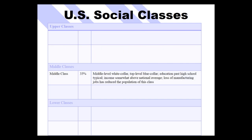Now let's move down to the middle classes, starting with the upper-middle level — middle-level white collar and top-level blue collar. Education is generally past the high school level. Income is somewhat above the national average, but this is shrinking because of the loss of manufacturing jobs.